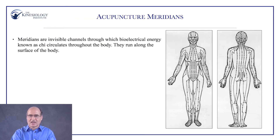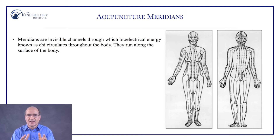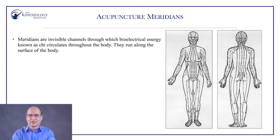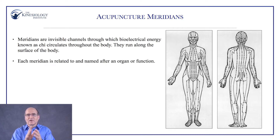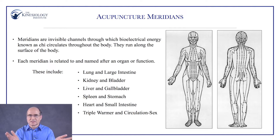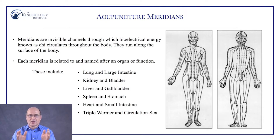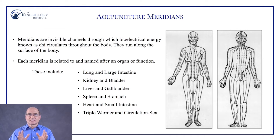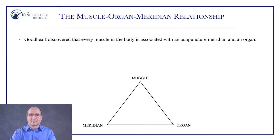The primary energy fields we work with are the acupuncture meridians — invisible channels through which flows bioelectrical energy, also known as qi, running along the surface of the body. Each meridian is named after an organ or function: lung and large intestine, kidney and bladder, liver and gallbladder, spleen and stomach, heart and small intestine. Two meridians relate to functions specifically: triple warmer, which regulates heat in the three body cavities and relates to the thyroid, adrenals, and thymus gland; and circulation sex, which governs the circulation of fluids and the reproductive organs.